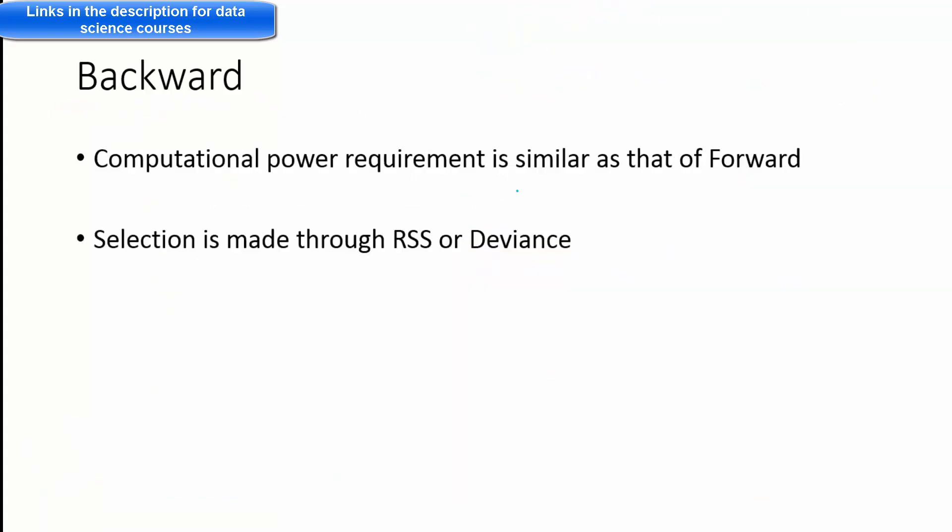So computational power requirement is similar to that of forward. And the selection method is through RSS and deviance that we have discussed. And the comparison between forward and backward is that you have more choices now. So you build a model with backward approach, you build a model with forward approach and then you take the final model from backward and take the final model from forward and then compare their...